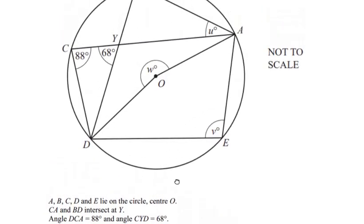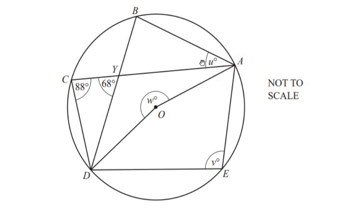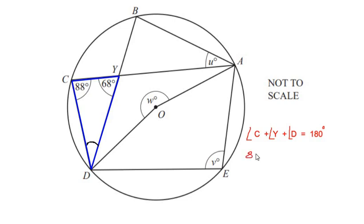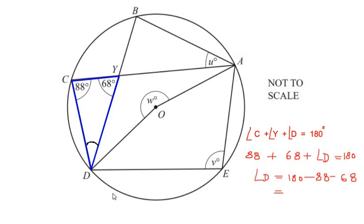We have to find the values of the missing angles. Let us start by finding the value of u, beginning with triangle CYD. Since this is a triangle, we can use the angle sum property: angle C plus angle Y plus angle D equals 180 degrees. With angle C as 88 degrees and angle Y as 68 degrees, this gives us angle D as 24 degrees.